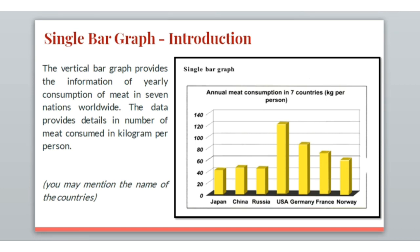In this particular slide you are able to see a bar graph with yellow colored pillars. You can observe that the USA shows the highest pillar and the lowest pillar is of Japan. By observing the graph you can easily understand that the graph is about annual meat consumption in seven countries, and the amount is given in kg per person.